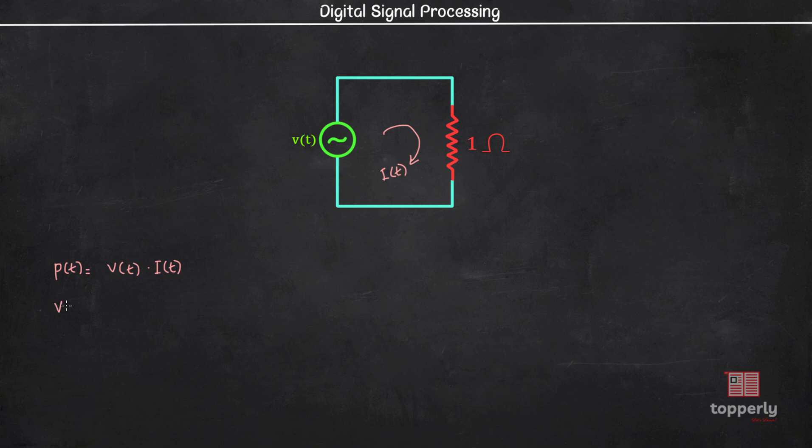Now using Ohm's law we can write V(t) equal to I(t) into R, where R is the 1 ohm resistance. Also, this equation can be rewritten as I(t) equal to V(t) by R.